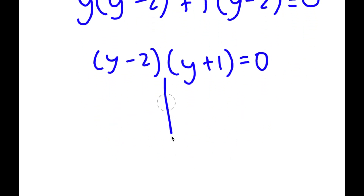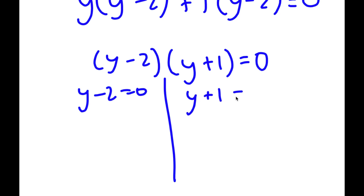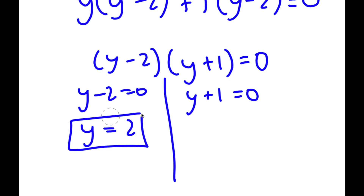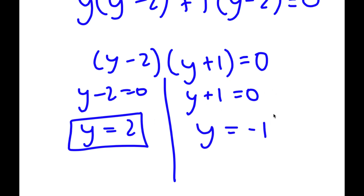So now this gives me two equations. I have y minus 2 is equal to 0 and y plus 1 is equal to 0. So for y minus 2 equals 0, y is simply equal to 2. And for y plus 1 equals 0, y is equal to negative 1.